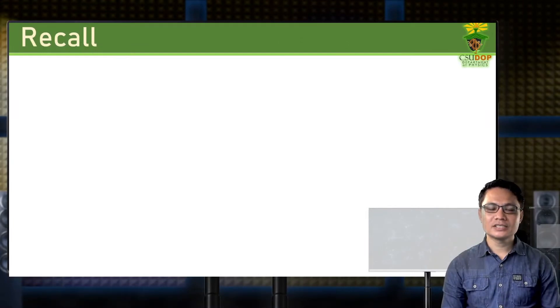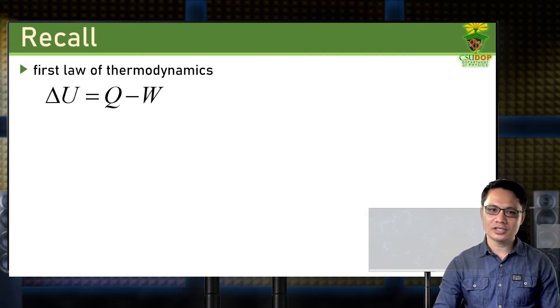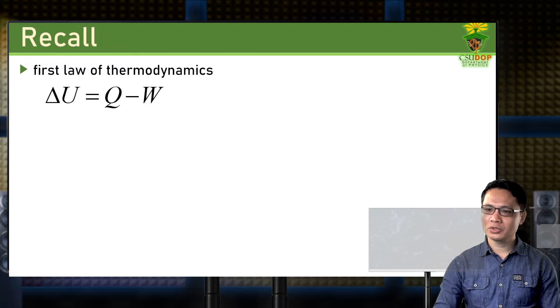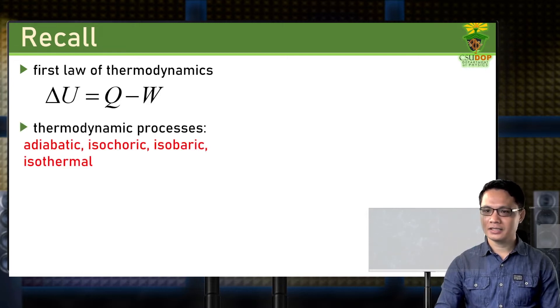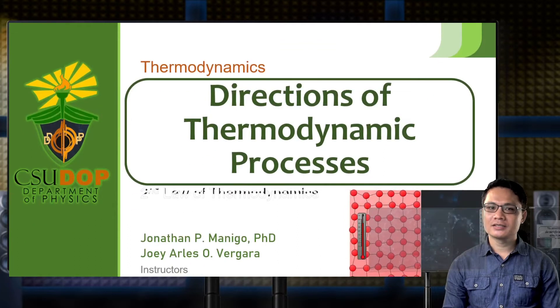Welcome back to this class on thermodynamics. In our previous discussion, we talked about the first law of thermodynamics — that the change in internal energy of a thermodynamic system is the difference between the heat added into the system and the work done by the system. We also covered common thermodynamic processes: adiabatic, isochoric, isobaric, and isothermal.